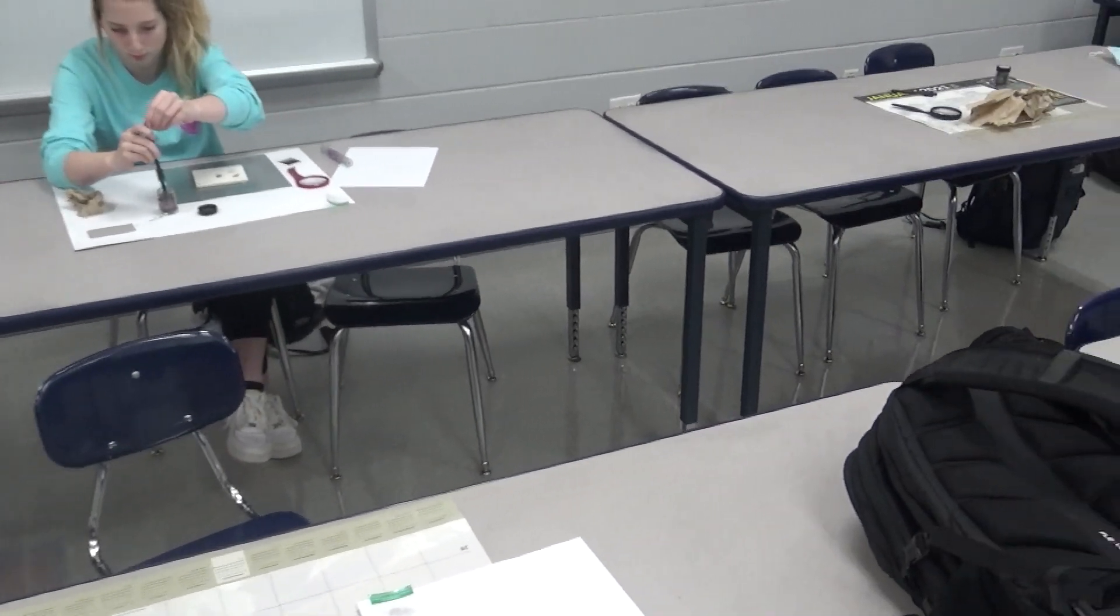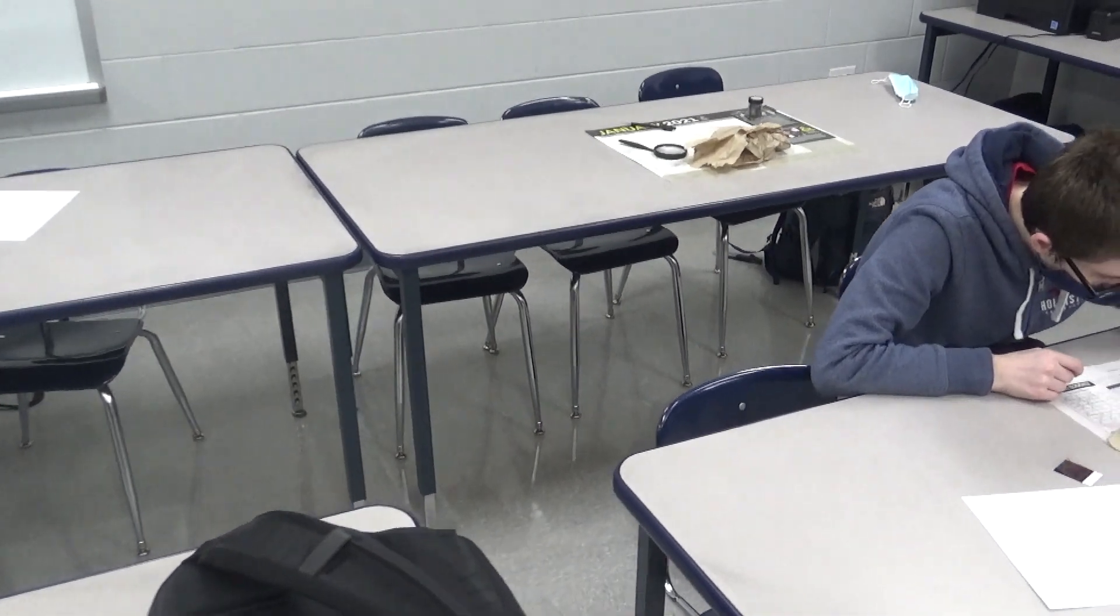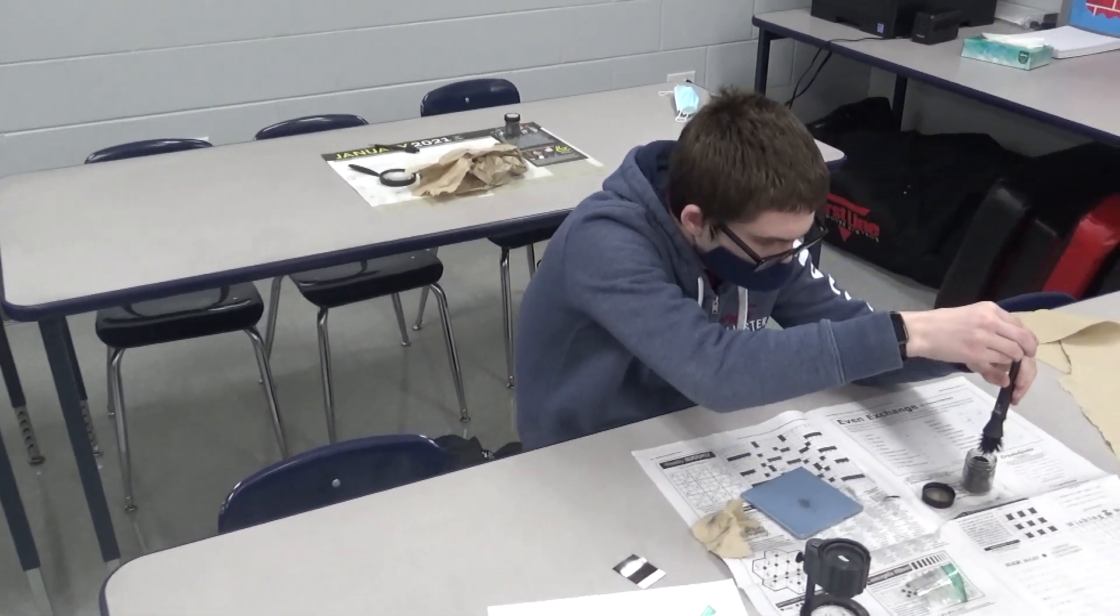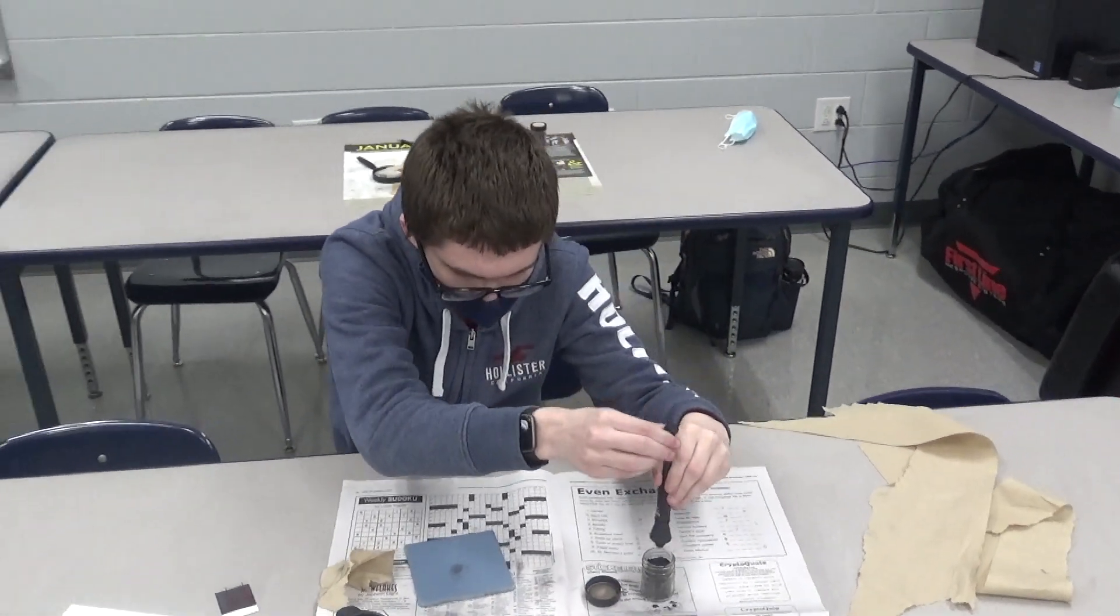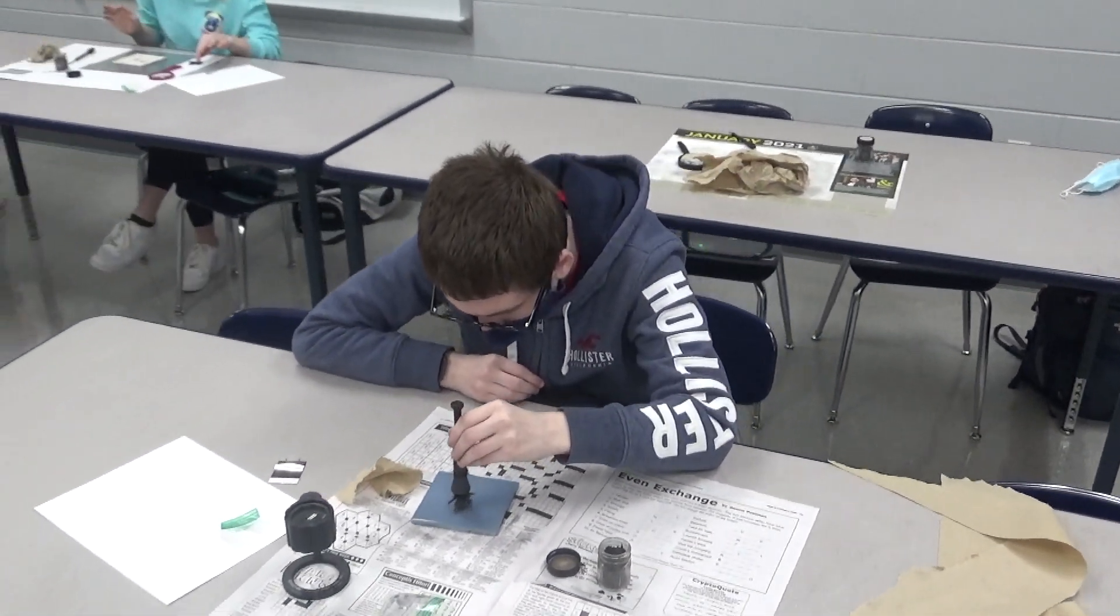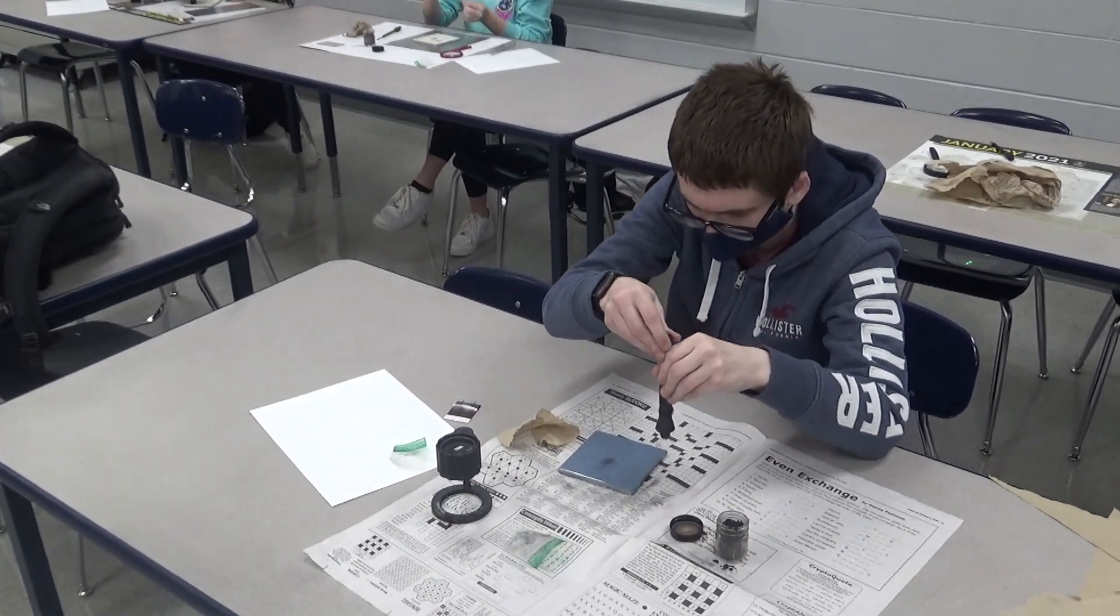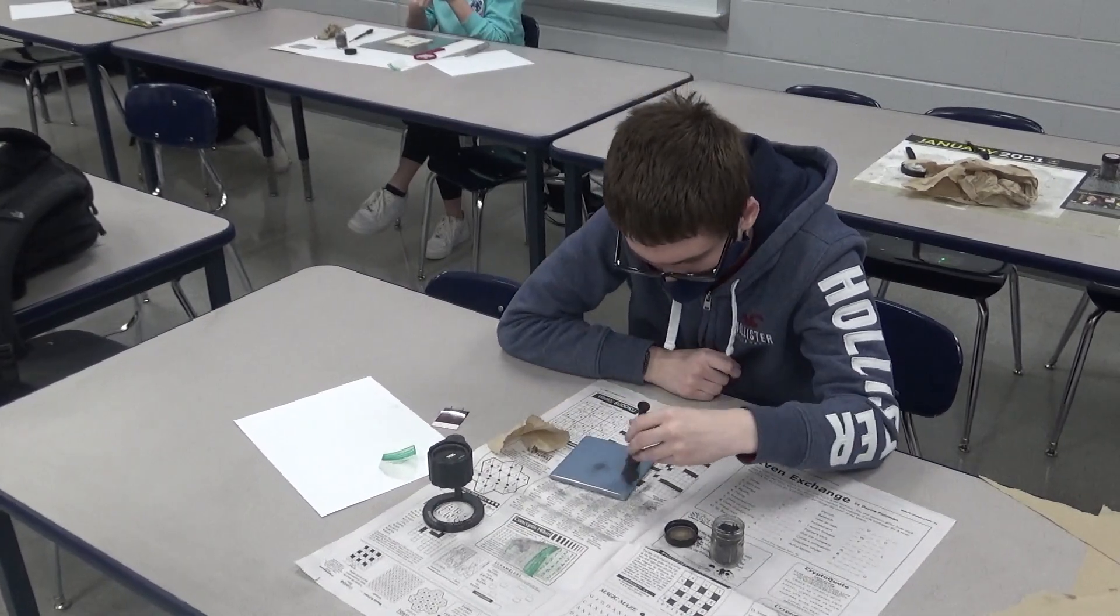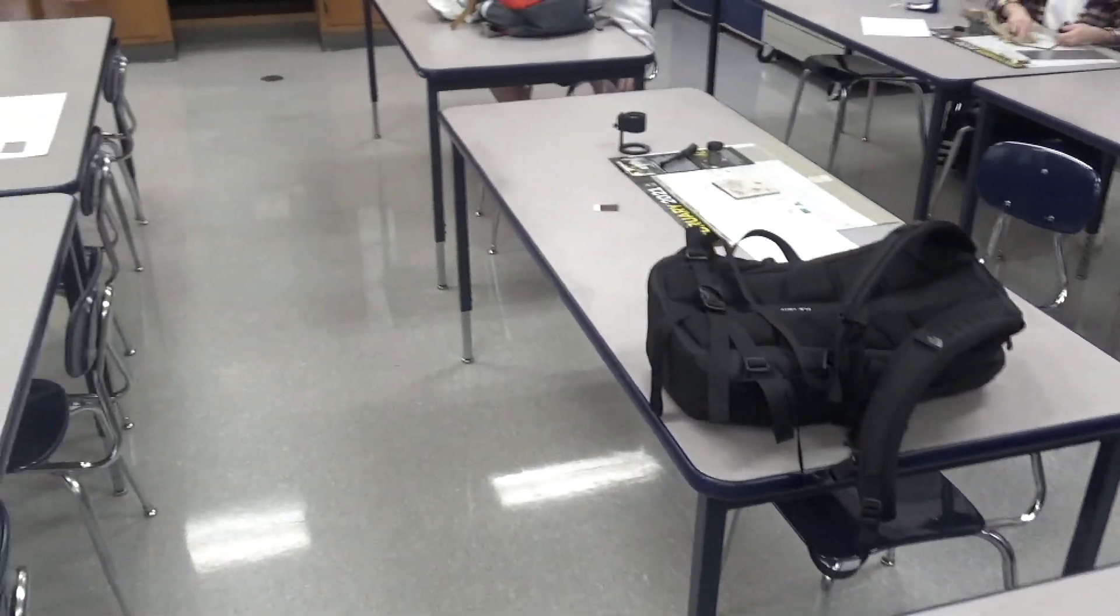So Criminal Justice 2 is all about how to respond to a crime scene, how to investigate, how to collect evidence. So right now they're working with fingerprints and how to collect fingerprints at a crime scene, how to preserve them for court. After this they'll move into DNA, how to collect DNA samples and preserve them as well, and then they get to responding to a crime scene, searching, measuring, collecting evidence, how to recreate a crime scene for court, and all the different components that you see on CSI.